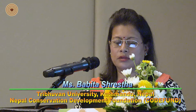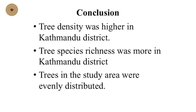These are the graphs for the results. In conclusion, tree density was higher in Kathmandu district, tree species richness was also greater in Kathmandu district, and trees in the study area were evenly distributed.